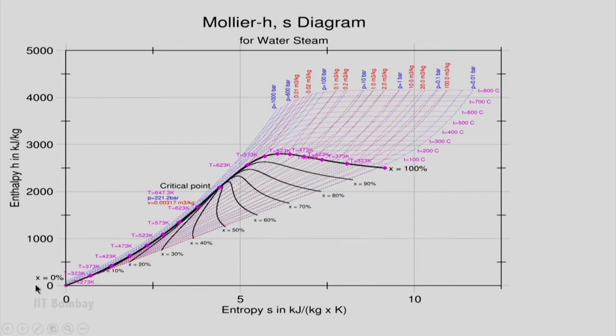I can show you two points: x equals 0 percent which is this line, and x equals 100 percent which is the saturated vapor line. Both these lines meet at the critical point. I have all the information available on the saturated liquid line and saturated vapor line.